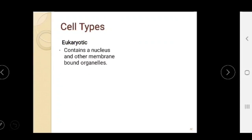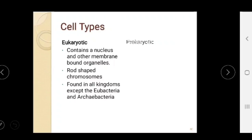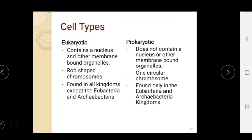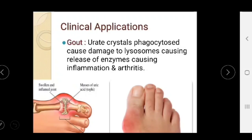Comparing cell types: eukaryotic cells contain a nucleus and membrane-bound organelles, while prokaryotic cells do not contain a nucleus or other membrane-bound organelles. Prokaryotic cells contain one circular chromosome; eukaryotic cells are found in all kingdoms except Eubacteria and Archaebacteria, whereas prokaryotic cells are found only in Eubacteria and Archaebacteria kingdoms.